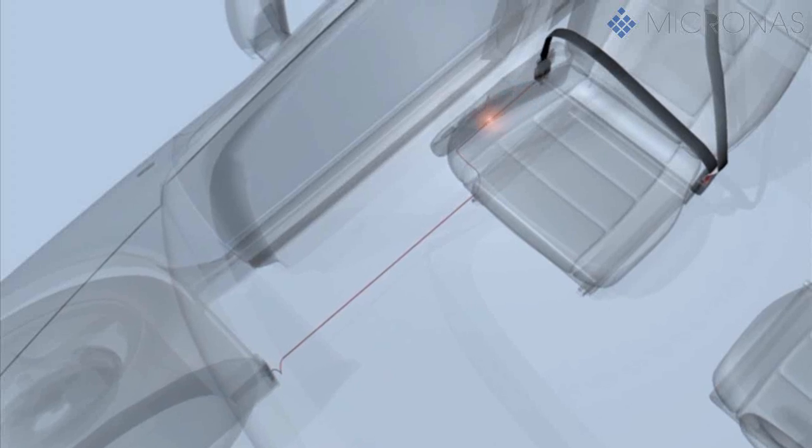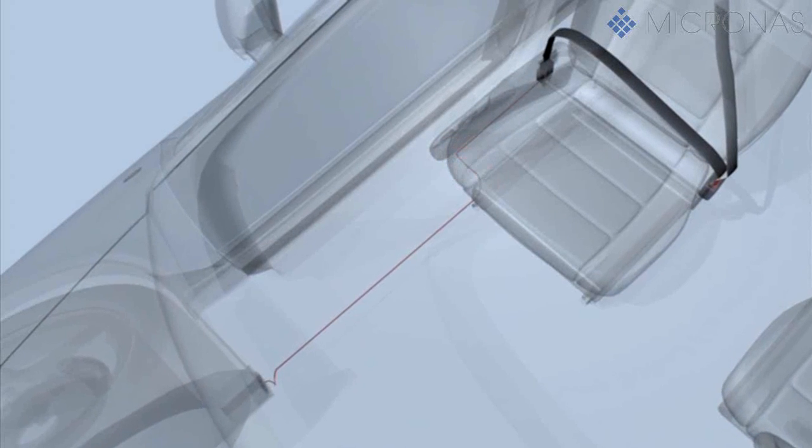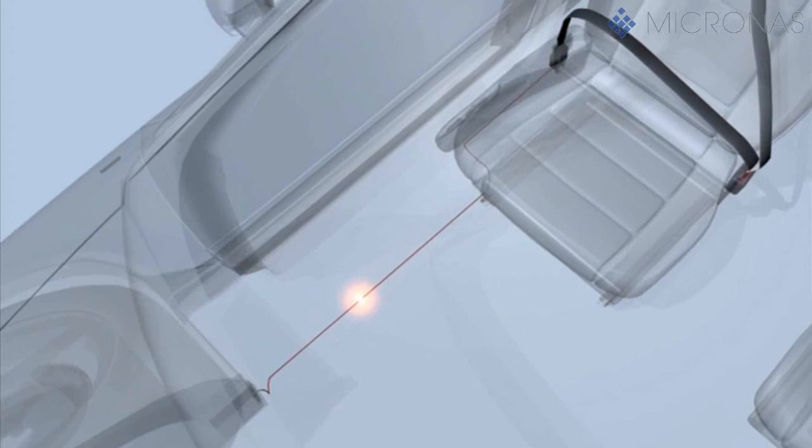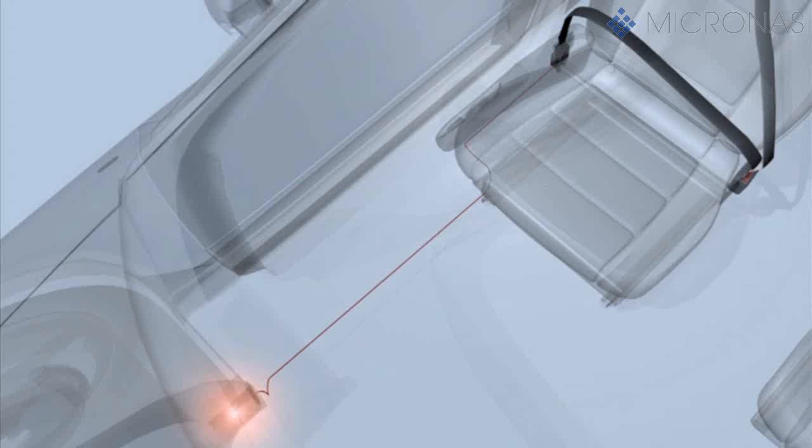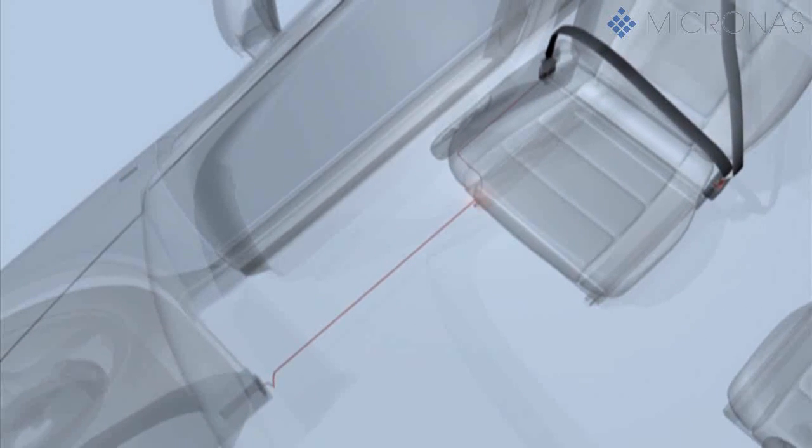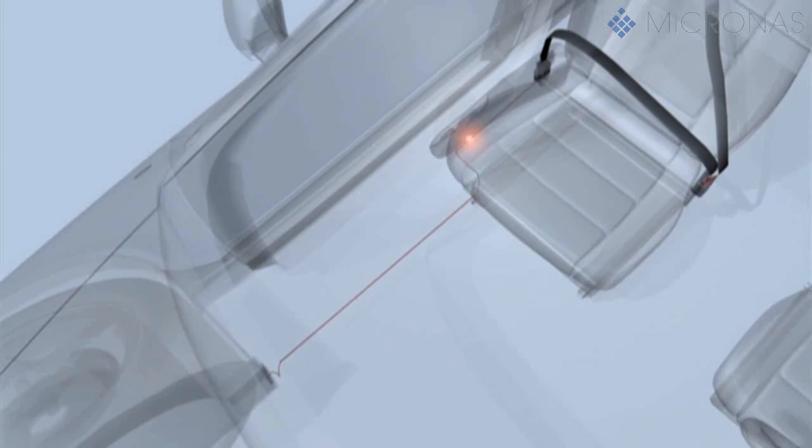This sensor signal is transmitted to the airbag control unit. Analyzing the change in the magnetic field, the control unit can judge the force of the mass being accelerated in the belt, and draw conclusions on the person or object placed on the seat.